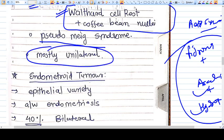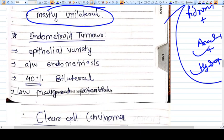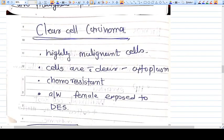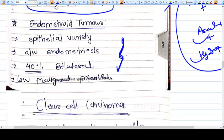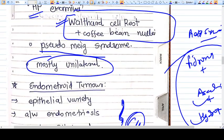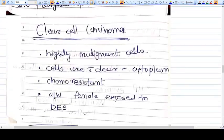Now endometrioid tumor—the name suggests it looks like endometrium. It's associated with endometriosis, 40% are bilateral, and the malignant potential is very low. Endometrioid carcinoma is a malignant tumor.